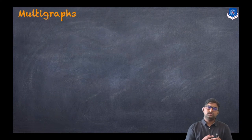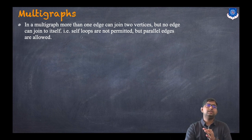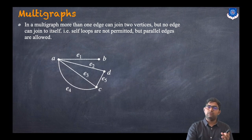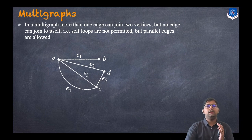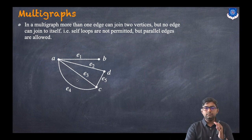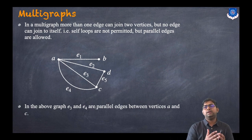Now let us discuss types of graphs. The first type is a multigraph. In a multigraph, more than one edge can join two vertices, but no edge can join a vertex to itself — so self-loops are not permitted but parallel edges are allowed. In the example graph with four vertices A, B, C, D and five edges, E3 and E4 are parallel edges between A and C, which makes it a multigraph.